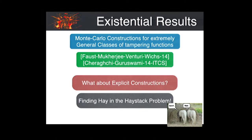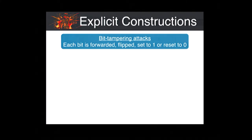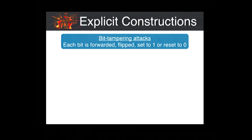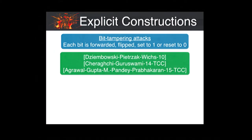Not all hope is lost — we know explicit constructions for several interesting classes of tampering functions. Beginning from the introductory work by Dziembowski, Pietrzak, and Wichs in 2010, where they considered bit tampering attacks: an adversary can tamper each bit individually and decide whether to forward it, flip it, set it to one, or reset it to zero. This class of attacks is a special case of the tampering class we consider — if you fix the permutation to be the identity permutation, this is the exact class. We now have explicit constructions resistant to bit tampering attacks.